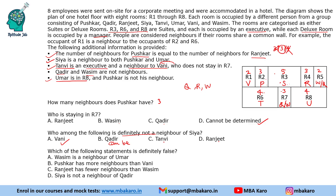Which of the following statements is definitely false? 'Vaseem is a neighbor of Umar' — that is true. 'Pushkar has more neighbors than Vani' — Pushkar has three, Vani has two, so true. 'Ranjit has fewer neighbors than Vaseem' — Ranjit has three neighbors; Vaseem may have two or three, so Ranjit cannot definitely have fewer. This is false because Ranjit is either equal to or greater than Vaseem. 'Sia is not a neighbor of Kadir' — this cannot be determined. So the third statement is definitely false.